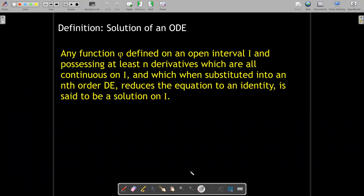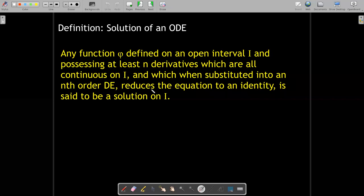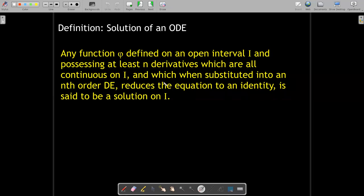Let's walk through this definition. Any function phi, which is defined on an open interval i, and possessing at least n derivatives, and those derivatives have to be all continuous on i. Now, n derivatives is going to depend on the order of the ODE. If you have a second order differential equation, then we only need two continuous derivatives. Then when we take that function phi, we substitute it and its derivatives into our differential equation. It's a solution, meaning that the equation will reduce to an identity. The right-hand side will be the same as the left-hand side.